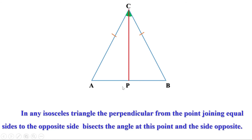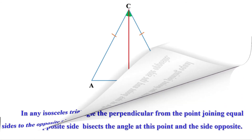CP is the bisector of line AB. Not only that, it is perpendicular to AB. So it is called the perpendicular bisector of AB.